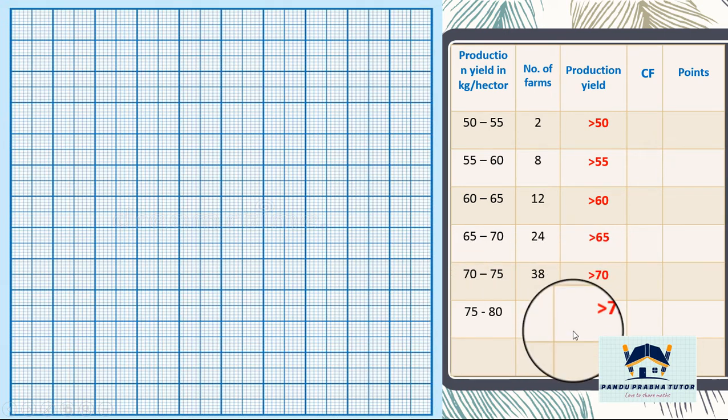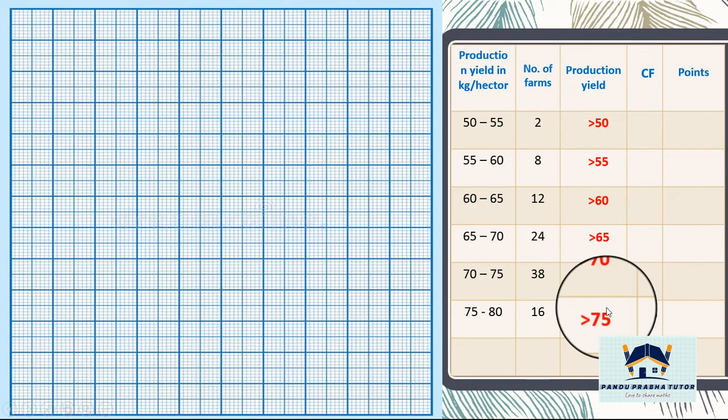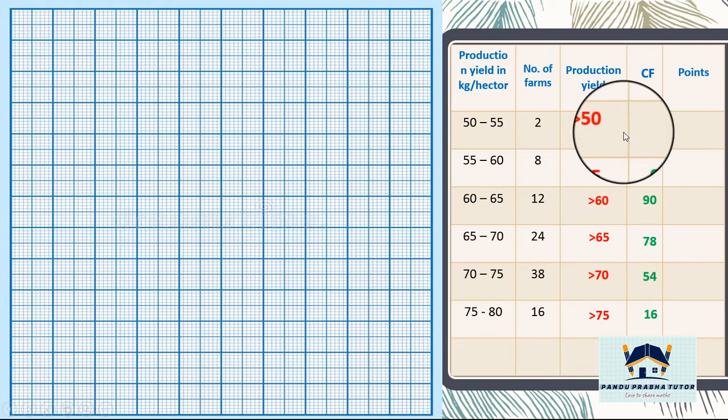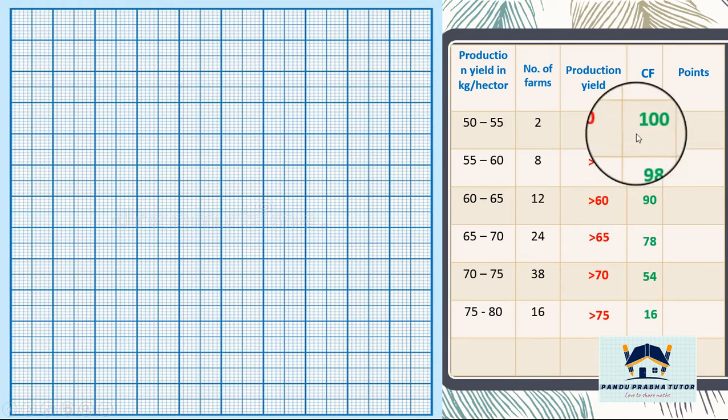Now we are going to find cumulative frequency. We should start from bottom. 16 as it is. 16 plus 38 is 54. 54 plus 24 is 78. 78 plus 12 is 90. 90 plus 8 is 98. 98 plus 2 is 100. We have to find CF from bottom.